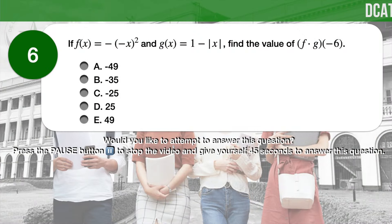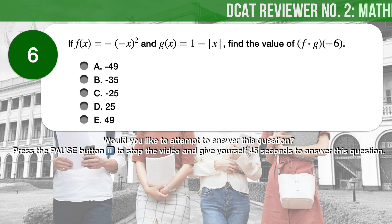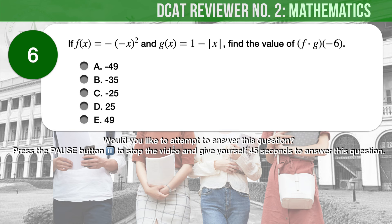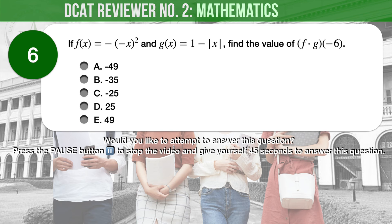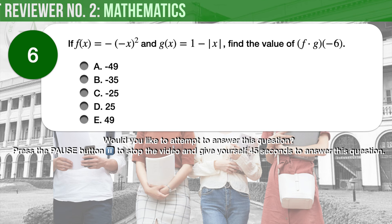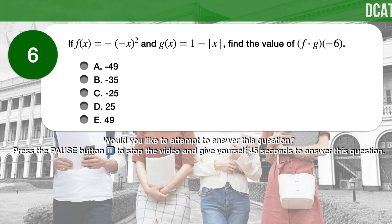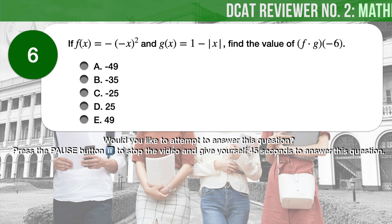Question number 6. If f(x) equals negative quantity negative x, squared, and g(x) equals 1 minus the absolute value of x, find the value of the function f composed with g of negative 6. A. Negative 49. B. Negative 35. C. Negative 25. D. 25. E. 49.